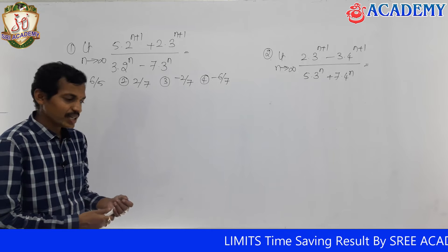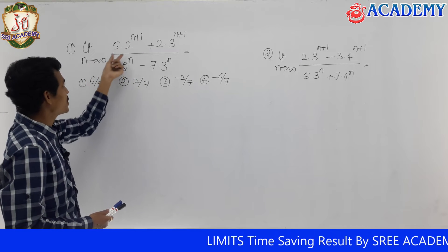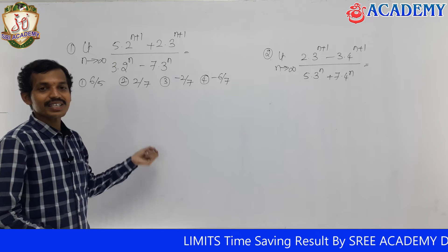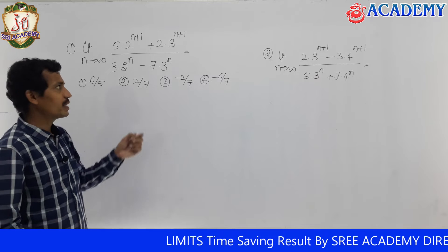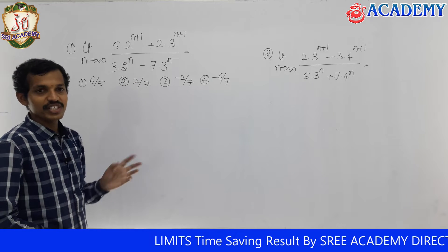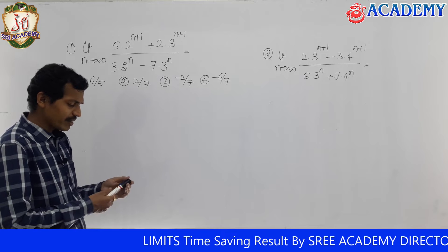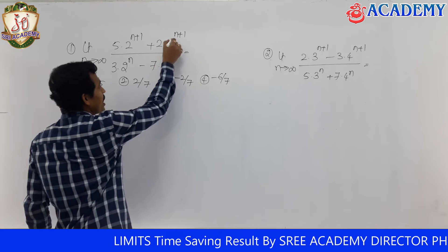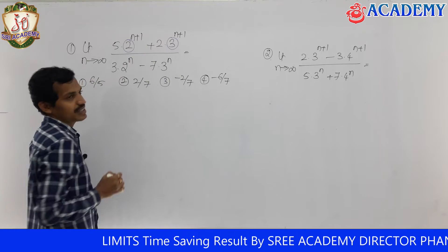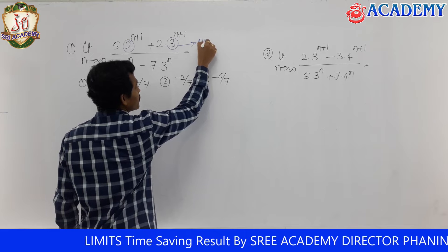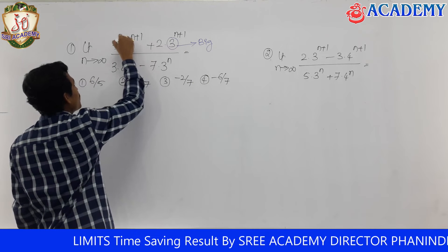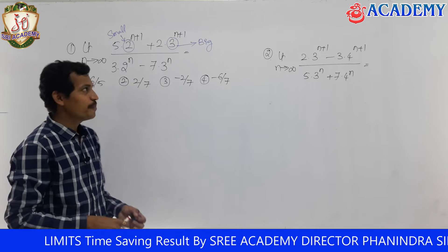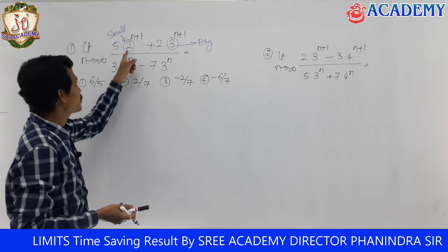Simply, as n tends to infinity, a base raised to the power n — depending on the base value — goes to infinity or 0. But we can't decide right now without checking. So simply what we do is we look at the bases. Here we are comparing two bases: this one is the big value and this is the small value.